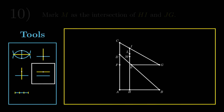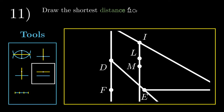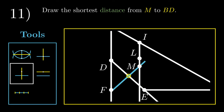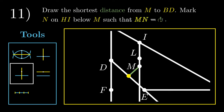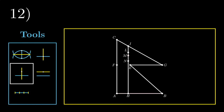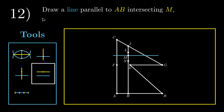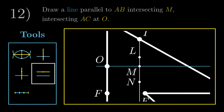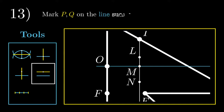Let's zoom in on point M. Step 11 requires us to draw the shortest distance from M to BD. To do this, we're going to draw a line perpendicular to DE passing through point M. The distance from M to this point of intersection is the shortest distance. Now mark N on HI below M such that MN equals this shortest distance. Now we can zoom out. For step 12, we want to draw a line parallel to AB intersecting point M. This line would intersect AC at O. Let's zoom in near M again, and mark points P and Q on the line such that LN equals LP equals LQ. This amounts to drawing a circle with radius LN, and the corresponding points of intersection would be P and Q.